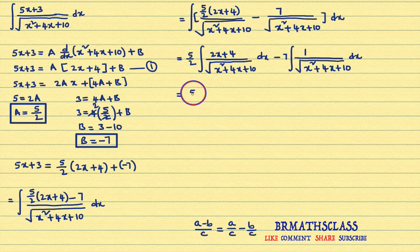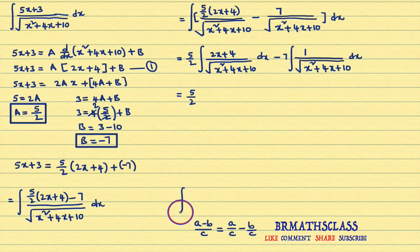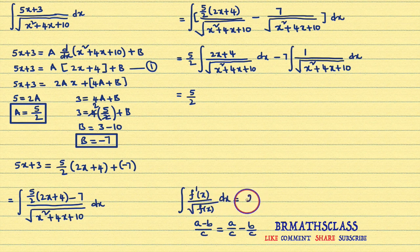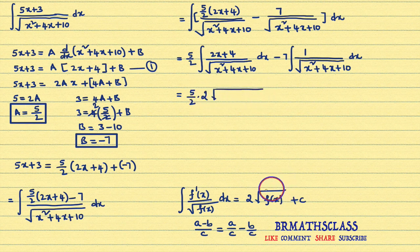Now integrating each term. The constant 5 by 2 can be written outside the integral: 5 by 2 into the integral of 2x plus 4 divided by square root of x square plus 4x plus 10, dx. You observe that the numerator is the derivative of the expression in the denominator. We learned this formula in integration by substitution: integral of f dash of x divided by root f of x dx equals 2 into root f of x plus c. So we can write its answer directly as 2 into root of x square plus 4x plus 10.